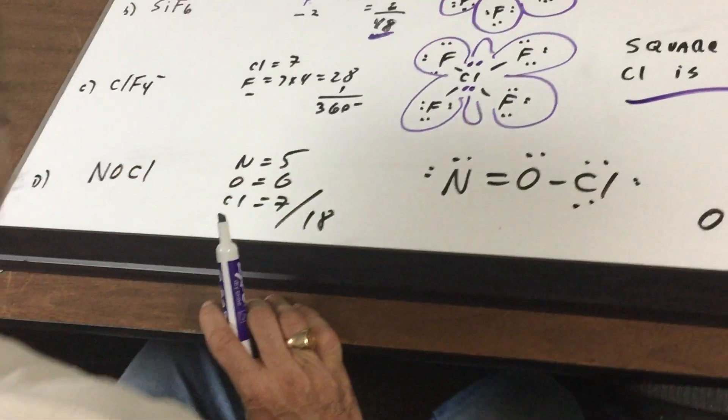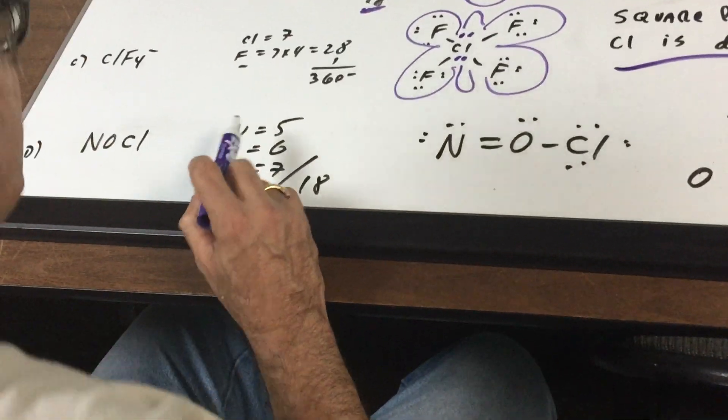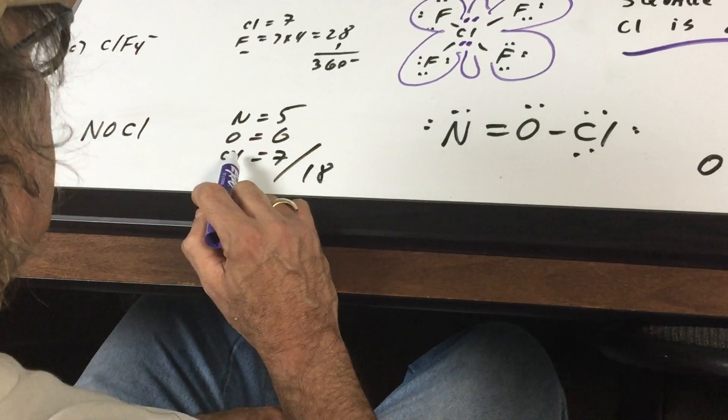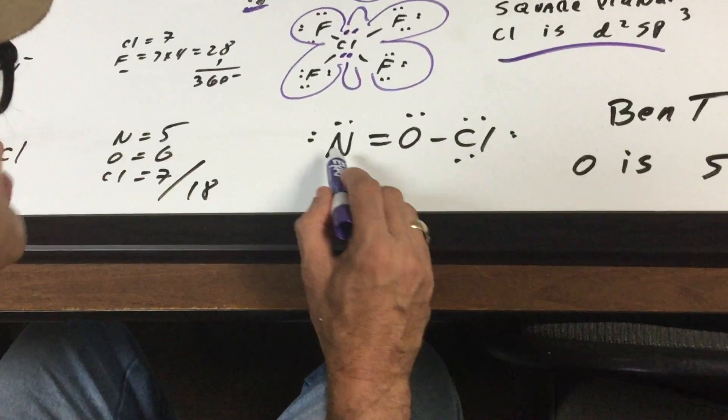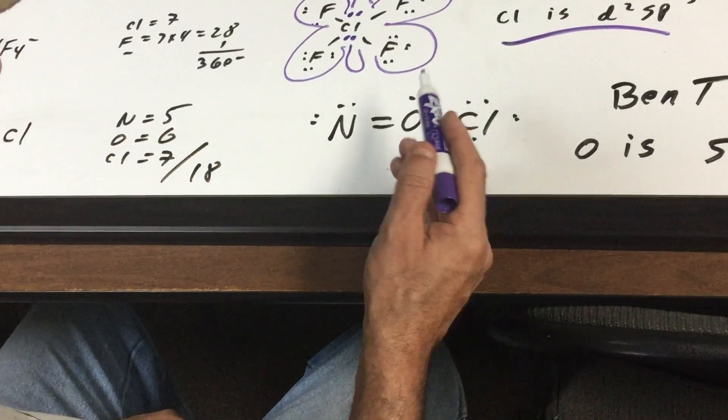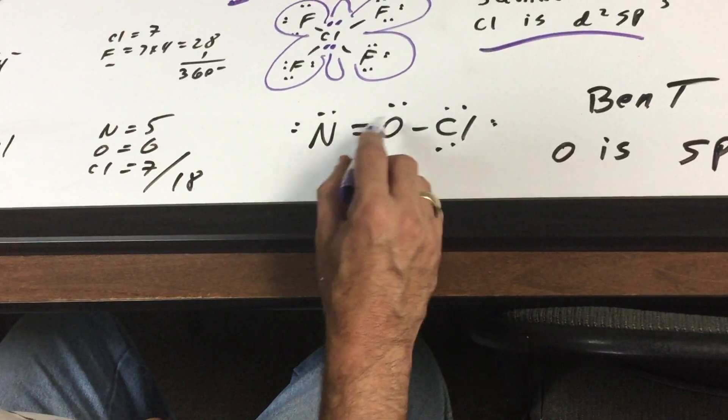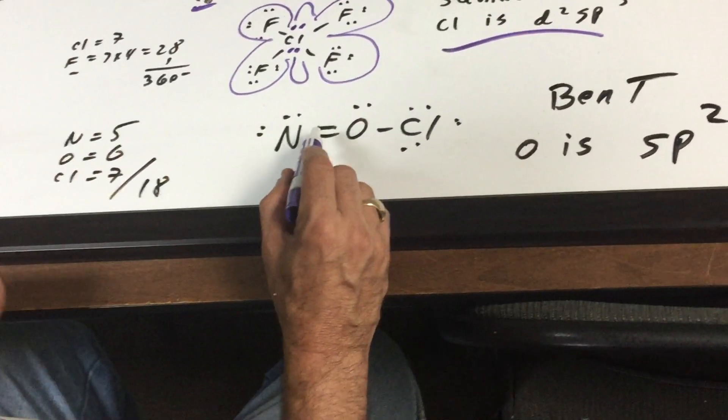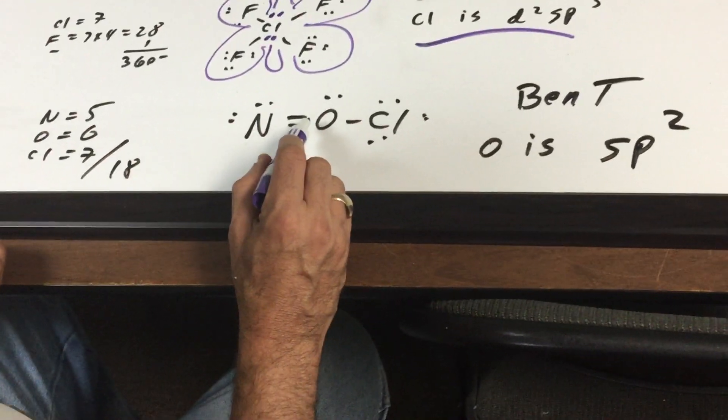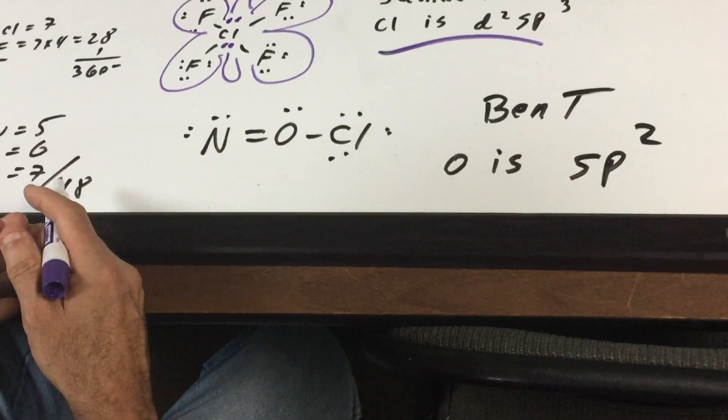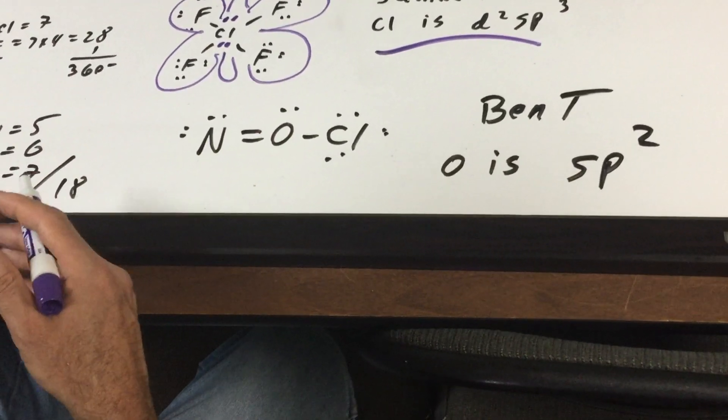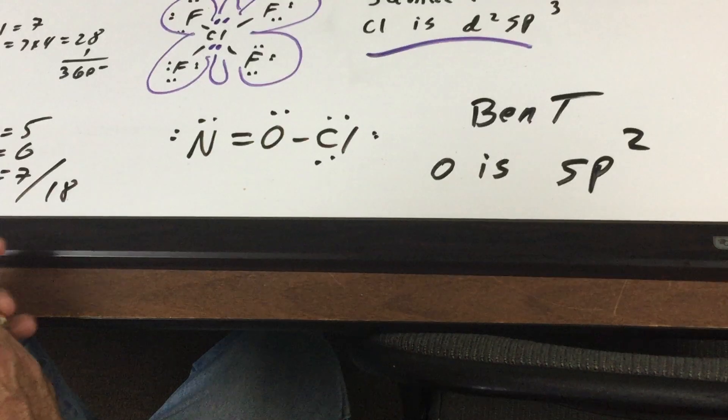And last but not least, NOCl. Nitrogen is in group five, oxygen is six, chlorine is seven, gives me 18. You go to the choices and you look to see which guys have 18. Notice when I connected it, I used a double bond. Many times oxygen, nitrogen, sulfur, carbon, phosphorus, these guys would be able to have a double bond, so you should be on the lookout.